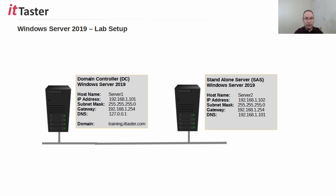The lab setup consists of a Windows Server 2019 domain controller called Server 1 on the left. Its IP address is 192.168.1.101. Server 1 is also running the DNS role, and the domain is called training.ittaster.com. We also have a standalone server, Server 2, on the right, that I'm going to join to the domain. I'll install the Active Directory Domain Services role and configure Server 2 to be an additional domain controller. You may want to take a screenshot of the IP address configuration to make the video easier to follow along with.